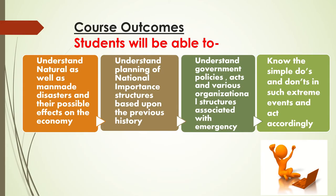First of all, let us go through the course outcomes of the subject — what students will be able to do at the end of the course. Students will be able to understand natural as well as man-made disasters and their possible effects on the economy. Students will be able to understand planning of national importance structures based upon previous history. Students will be able to understand government policies, acts, and various organizational structures associated with emergency. Students will be able to know the simple do's and don'ts in such extreme events and act accordingly.